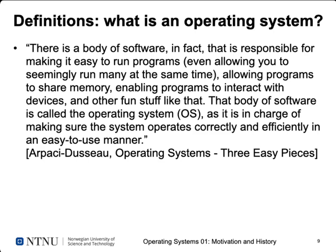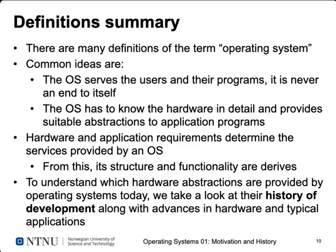What can we learn from all these definitions? There are many, but they share common ideas: the operating system serves users and their programs — it's never an end in itself. Without applications and users, we would not need one. The OS must know the hardware in detail and provide abstractions enabling application programs to make efficient use of that hardware. Hardware and application requirements determine the services an OS provides, and its structure and functionality are derived from this.